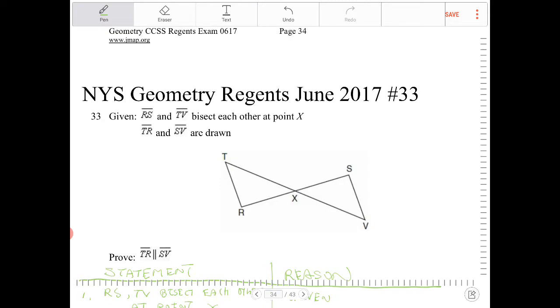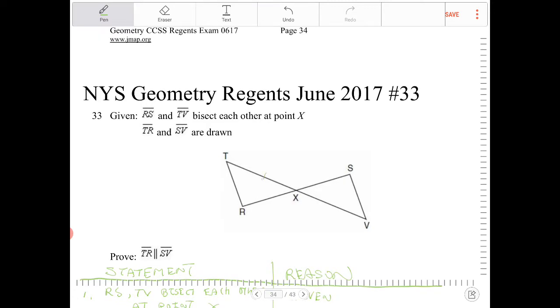because RS and TV bisect each other at X, then that would imply that TX and XV are congruent, and RX and SX are congruent.